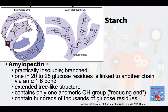The second component, which is more common, comprising 80% of starch, is amylopectin. Unlike amylose, amylopectin, which is practically insoluble, is branched. On average, 1 in 20 to 25 glucose residues is linked to another chain via an alpha-1,6 bond. This leads to an extended tree-like structure which, like amylose, contains only one anomeric group — a reducing end. Amylopectin molecules can contain hundreds of thousands of glucose residues.